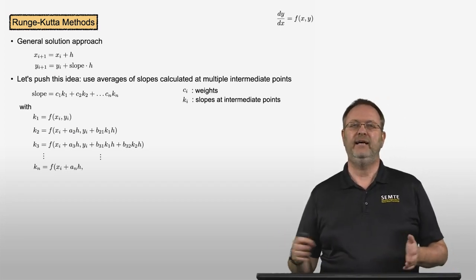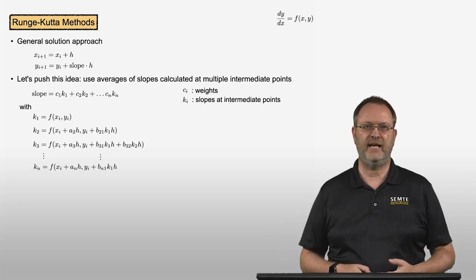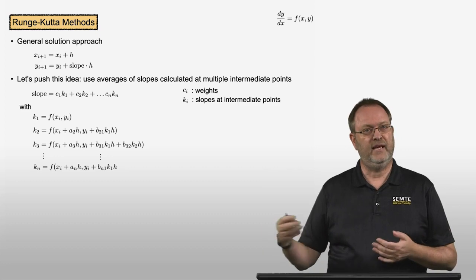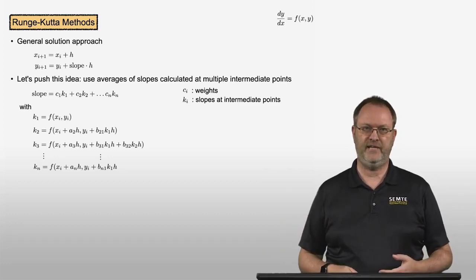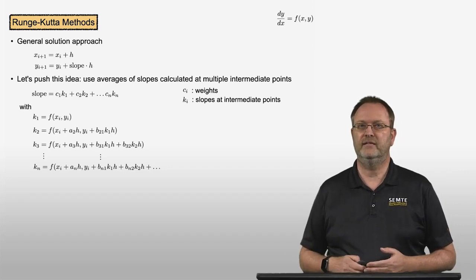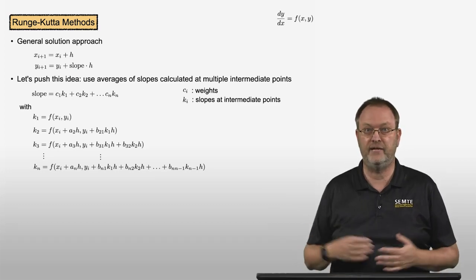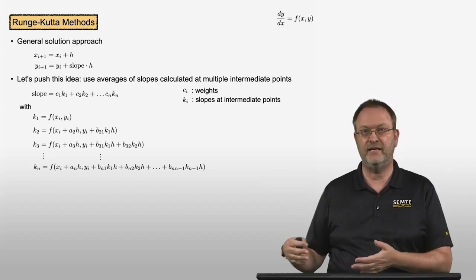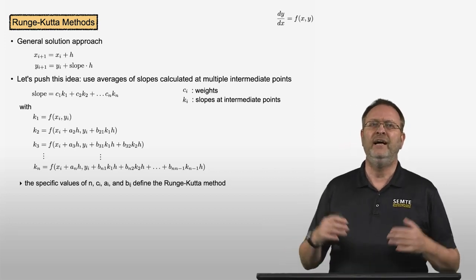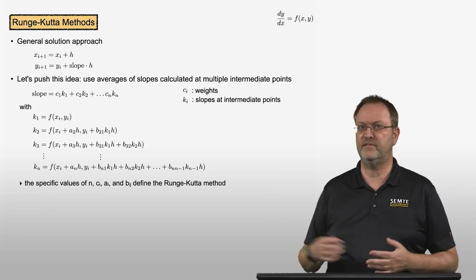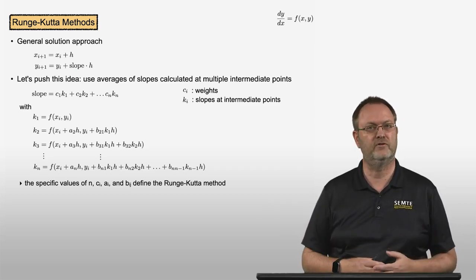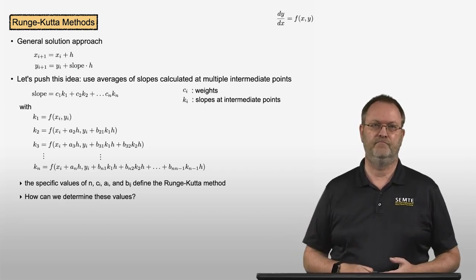k_n is evaluated at x_i plus a_n times h, and the corresponding y value is y_i plus b_n1 times k_1 times h, plus b_n2 times h, continuing until the last previously calculated slope b_{n,n-1} times k_{n-1} times h. The specific values of n, the weights c_i, and parameters a_i and b_{ij} define the actual Runge-Kutta method. We determine these values by minimizing the truncation error — increasing the truncation error order of the resulting method.